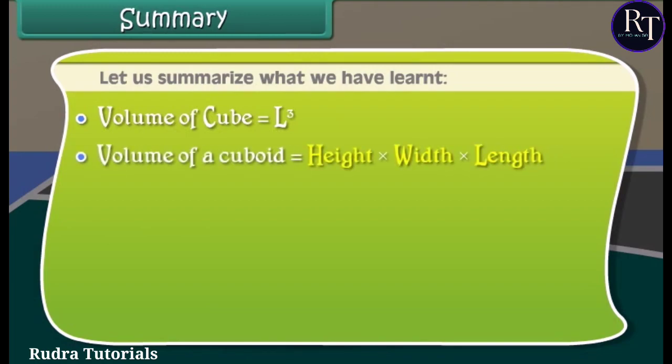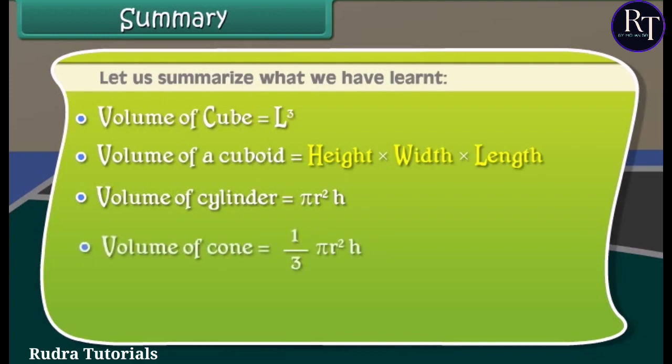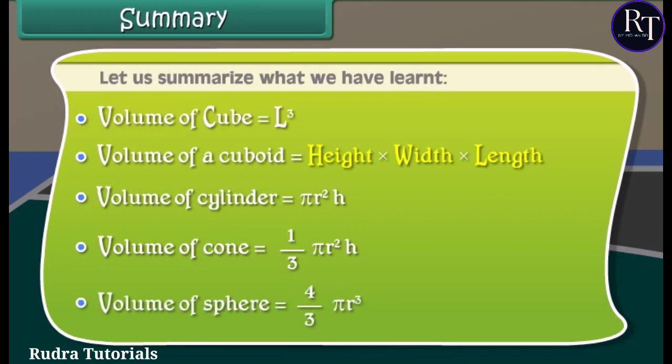Volume of a cuboid is equal to height into width into length. Volume of cylinder is equal to pi R square H. Volume of cone is equal to 1 over 3 pi R square H. Volume of sphere is equal to 4 over 3 pi R cube.